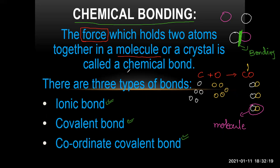We have three types of chemical bonds: ionic bonds, covalent bonds, and coordinate covalent bonds.